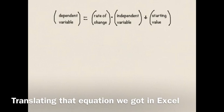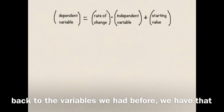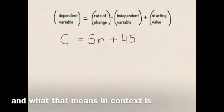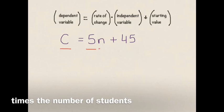Translating that equation that we got in Excel back to the variables we had before, we have that C equals 5N plus 45. And what that means in context is that the cost of the trip is the $5 ticket price times the number of students plus the $45 group fee.